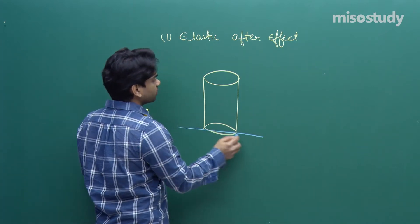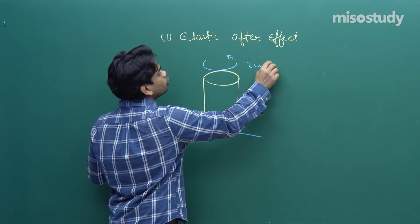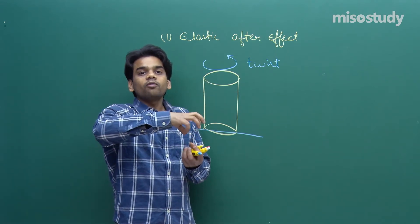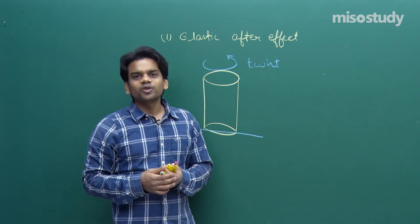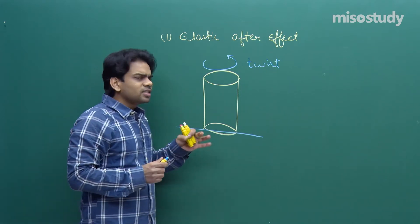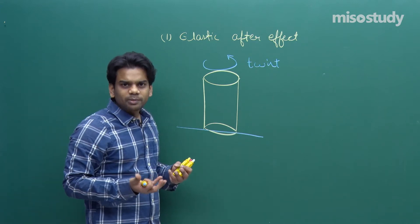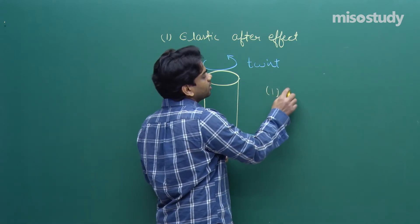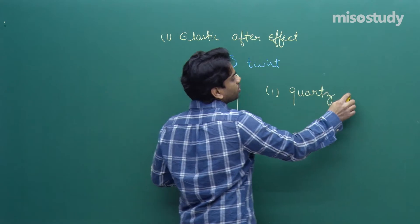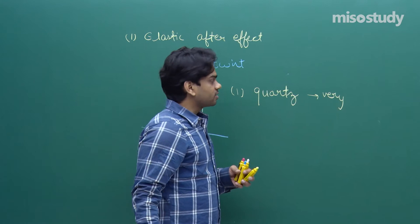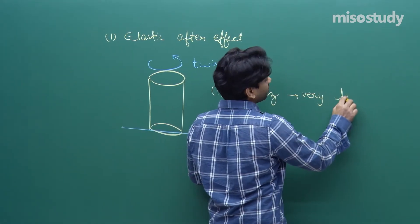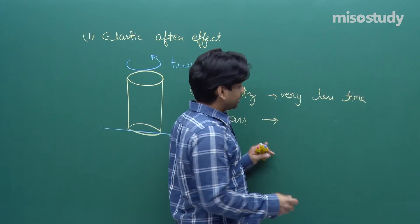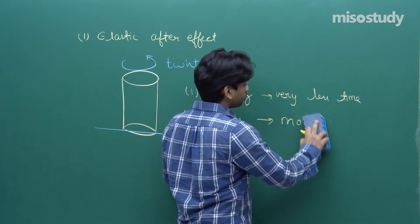If we try to twist a material keeping its bottom fixed, it rotates. Upon removal of the torque, it tries to regain its original shape. The time taken varies: quartz takes very less time to regain its original shape and structure, while glass takes hours to regain its original structure. So depending on the requirement, we may choose materials accordingly.